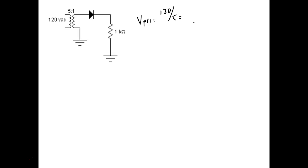So y'all understand where that came from? And usually transformers are always something to 1. So you take — if the big number is on the right-hand side, you multiply by that number. If it's on the left-hand side, you divide by that. So what does that give me? 24 volts.